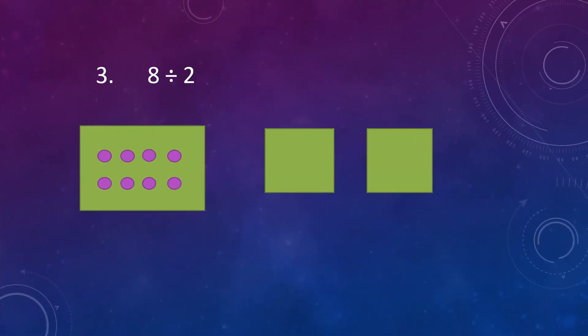Our third example is 8 divided by 2. Here 8 dots are given and we have to divide them equally between 2 boxes. So let's begin — children, take a dot and put it in the first box, take a second dot and put it in the second box. Put the dots equally in each box. Now we are left with 6 dots.